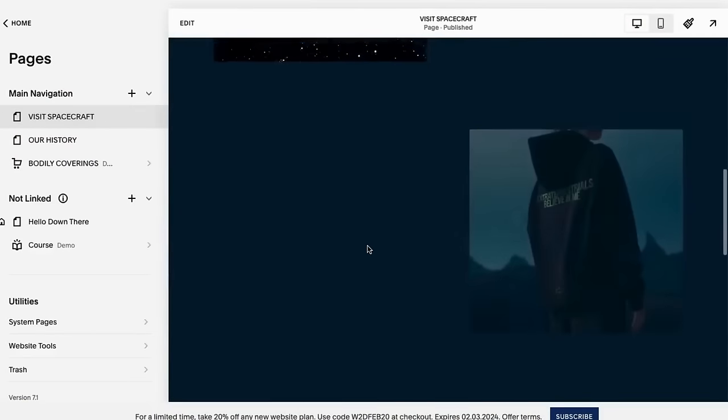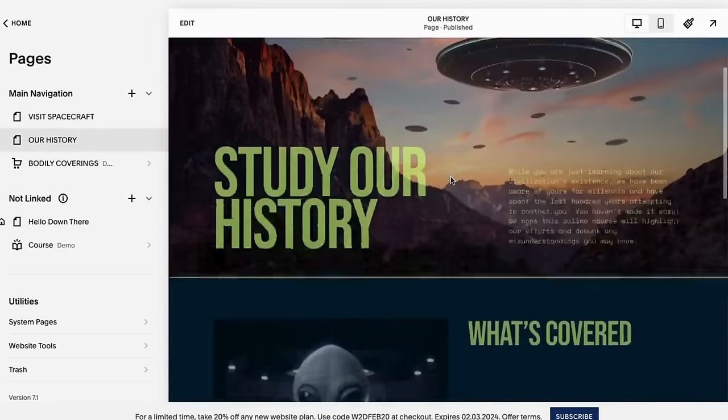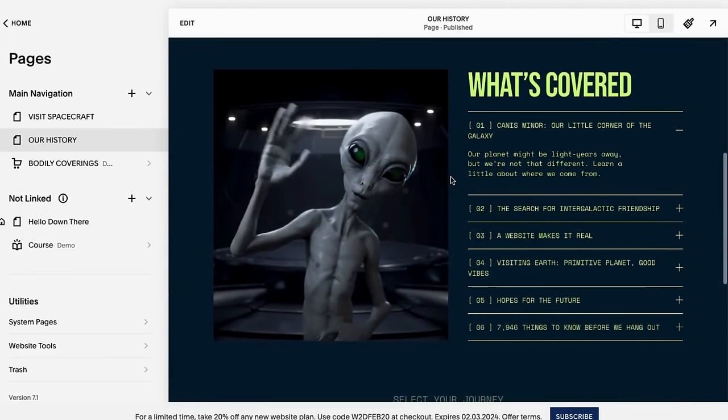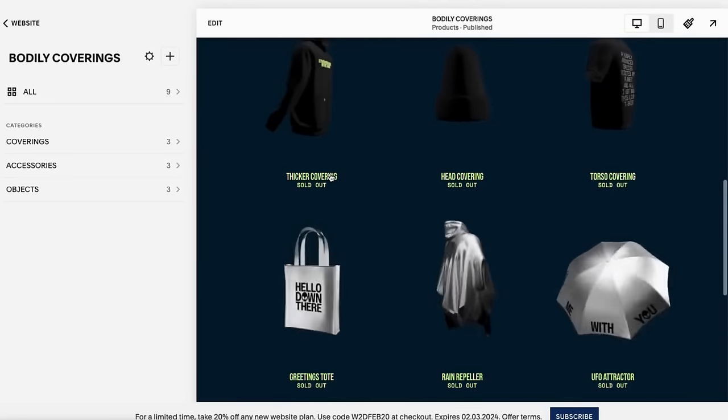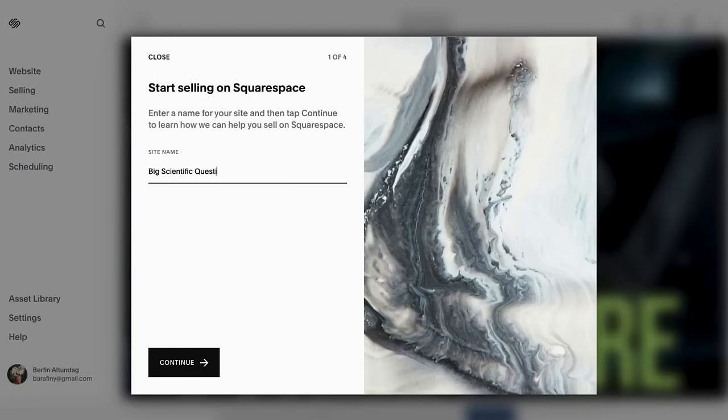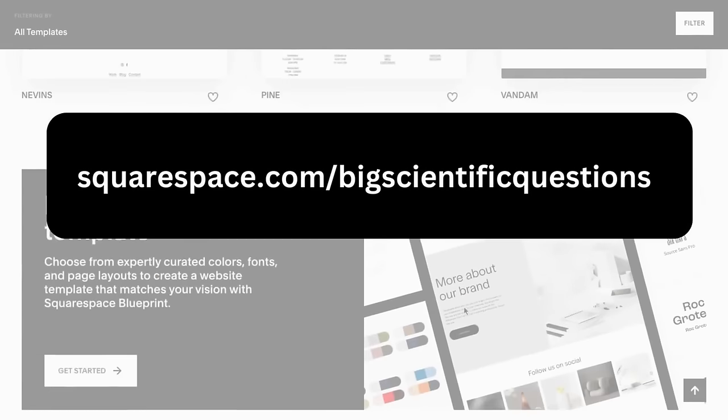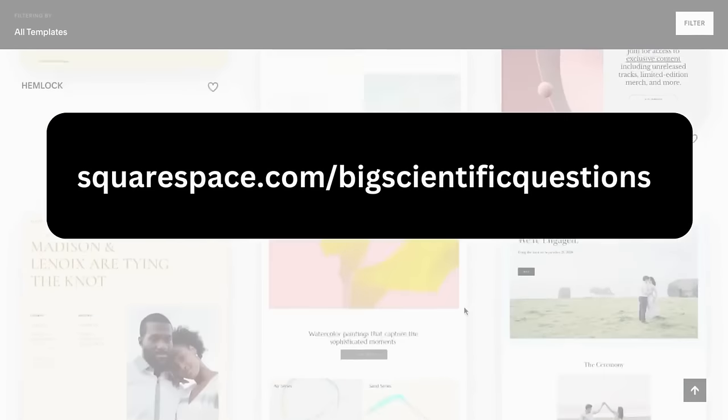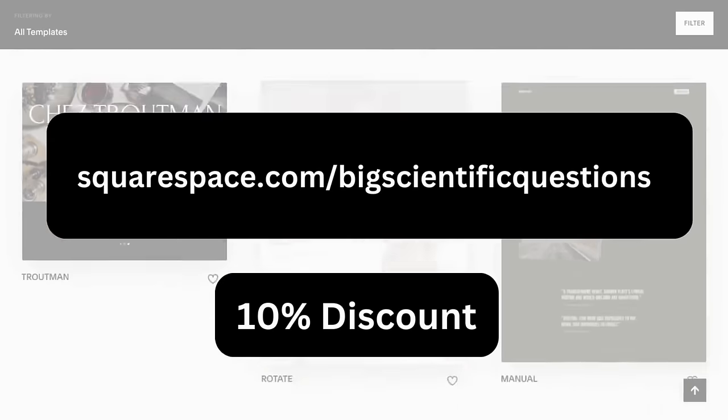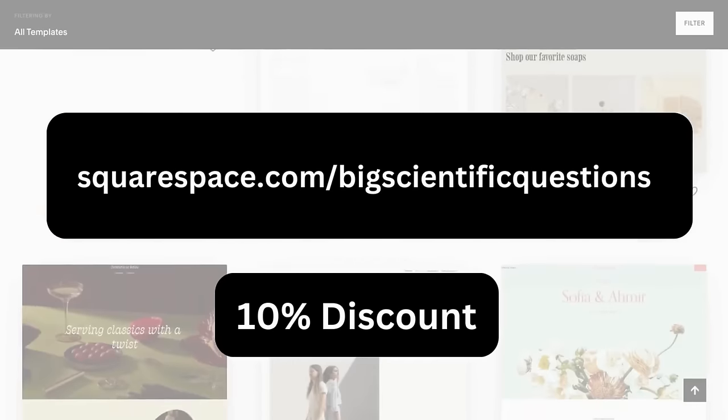Whether you're launching a personal blog, showcasing a portfolio, or establishing an online store, Squarespace offers a comprehensive solution. Start with a free trial at squarespace.com. When you're ready to launch, visit squarespace.com slash big scientific questions to enjoy a 10% discount on your first purchase of a website or domain.